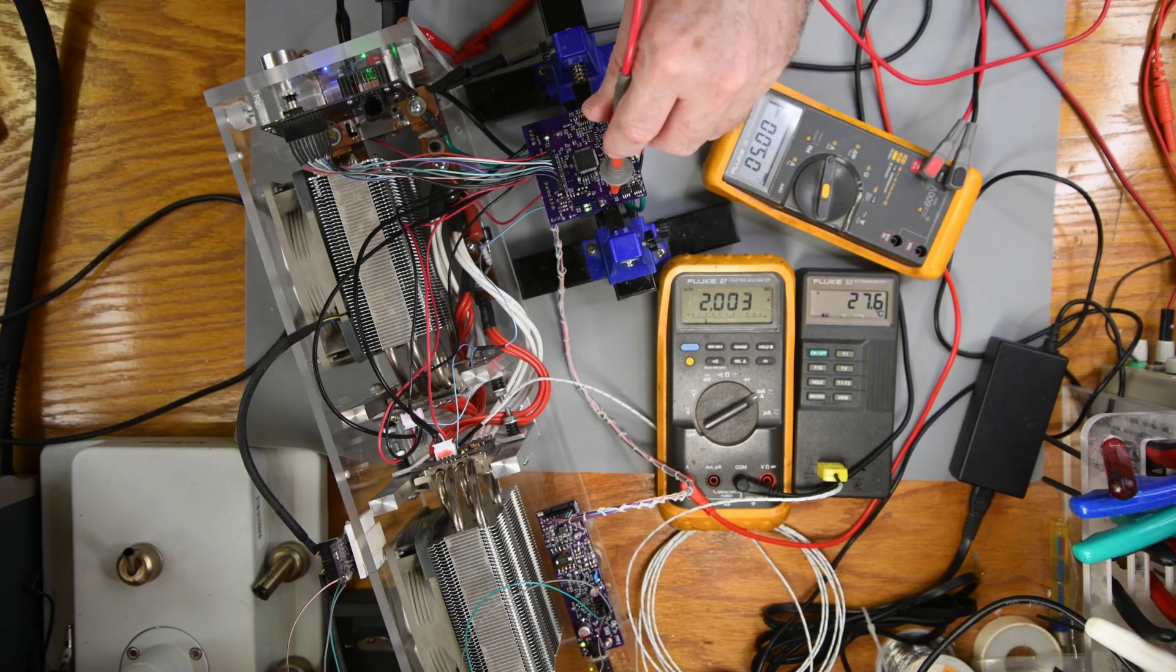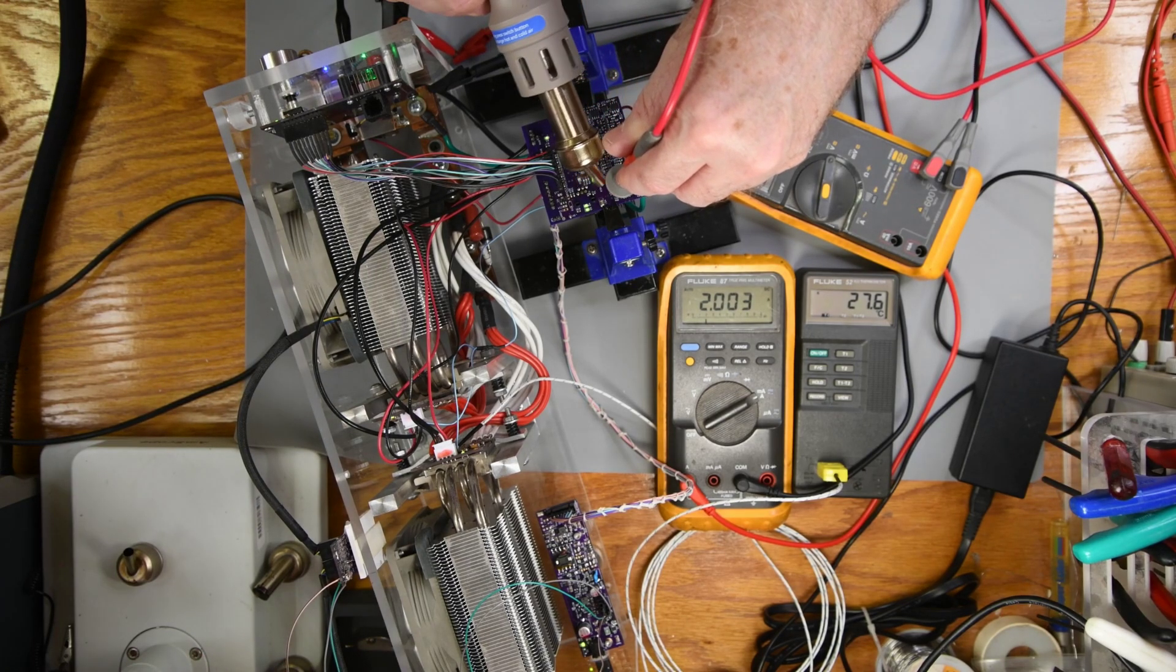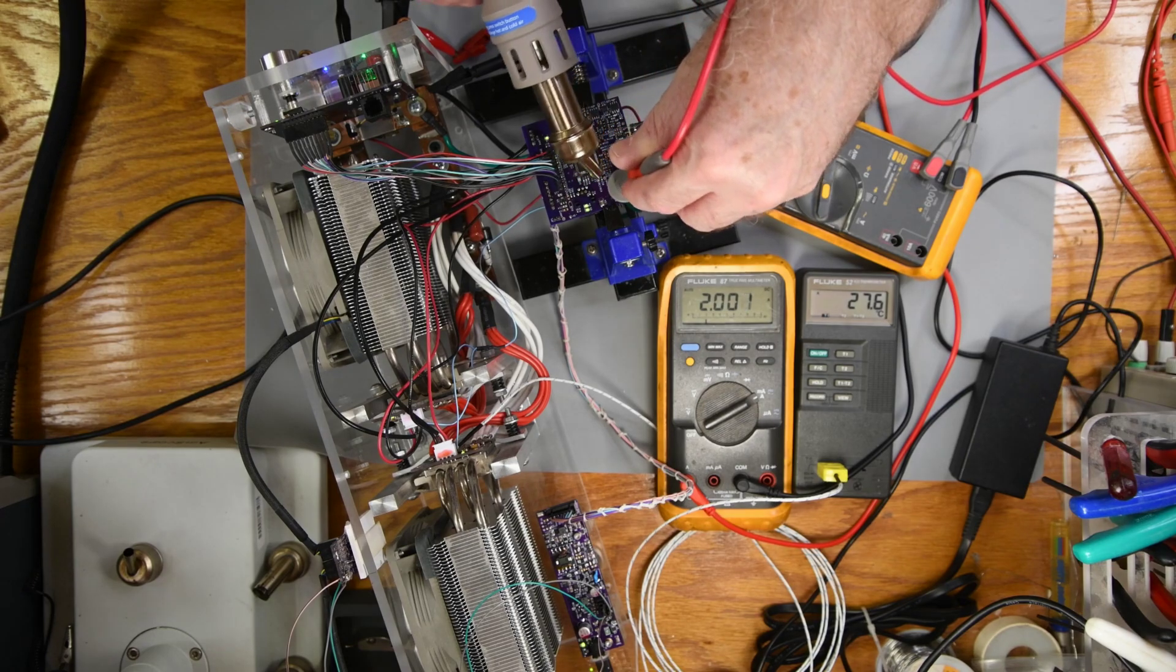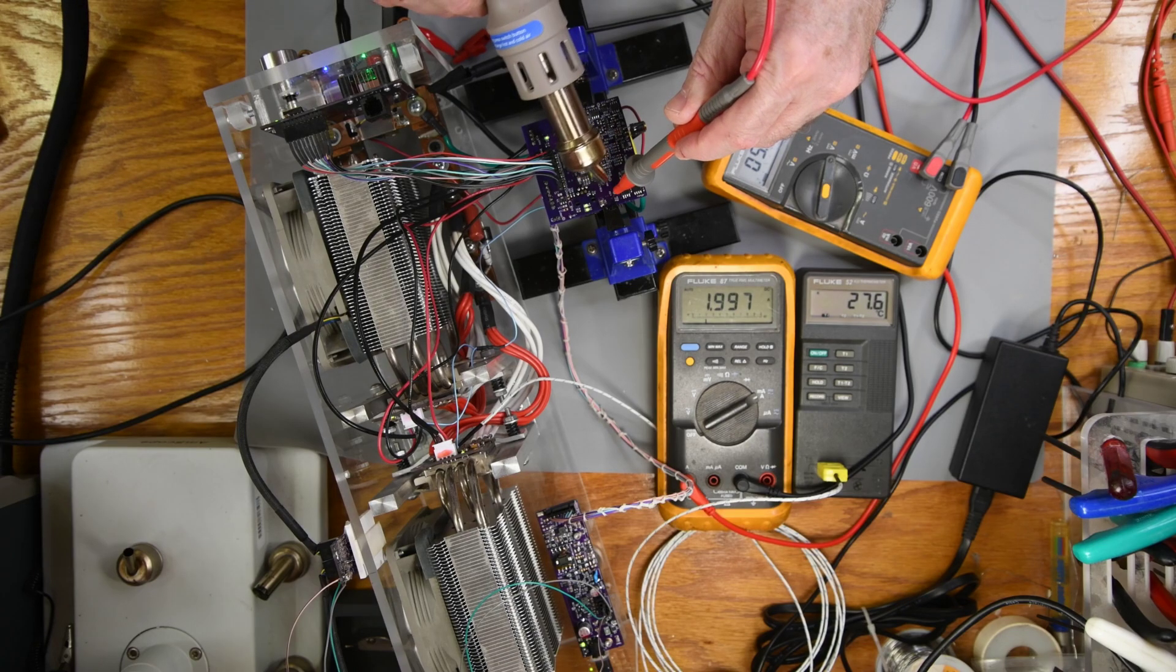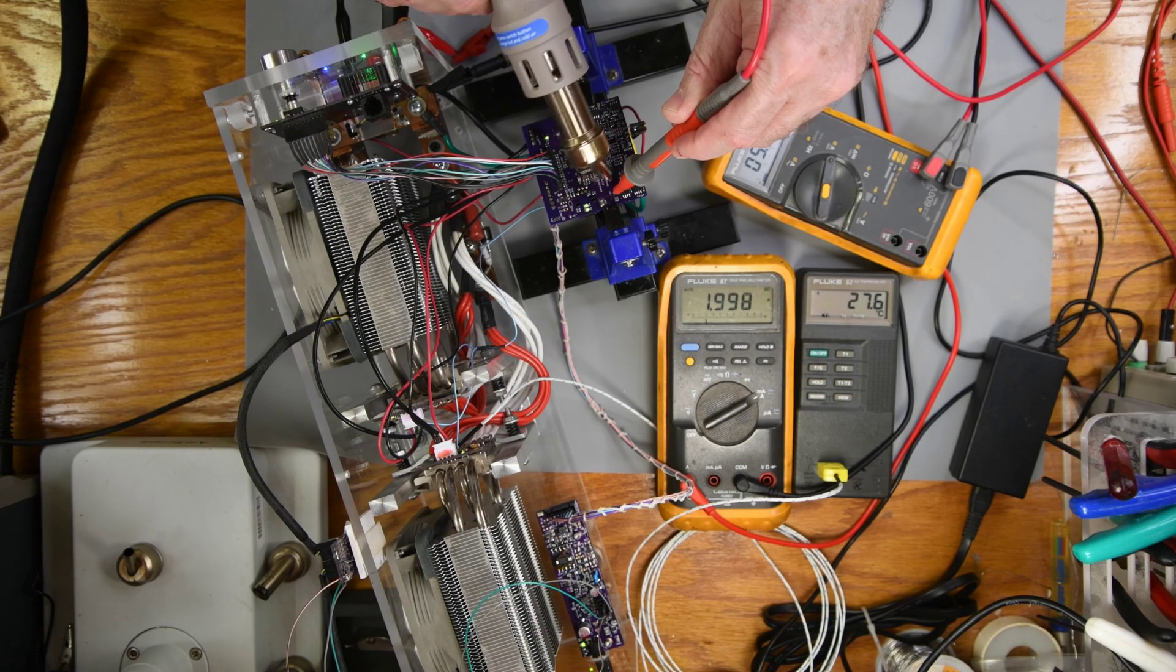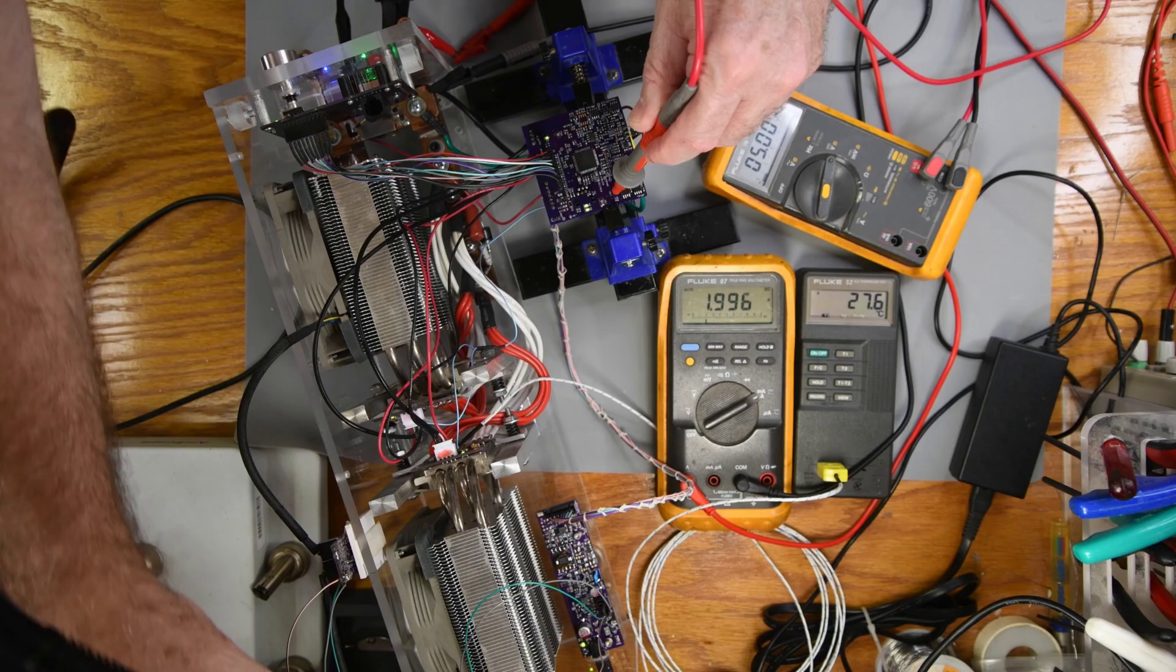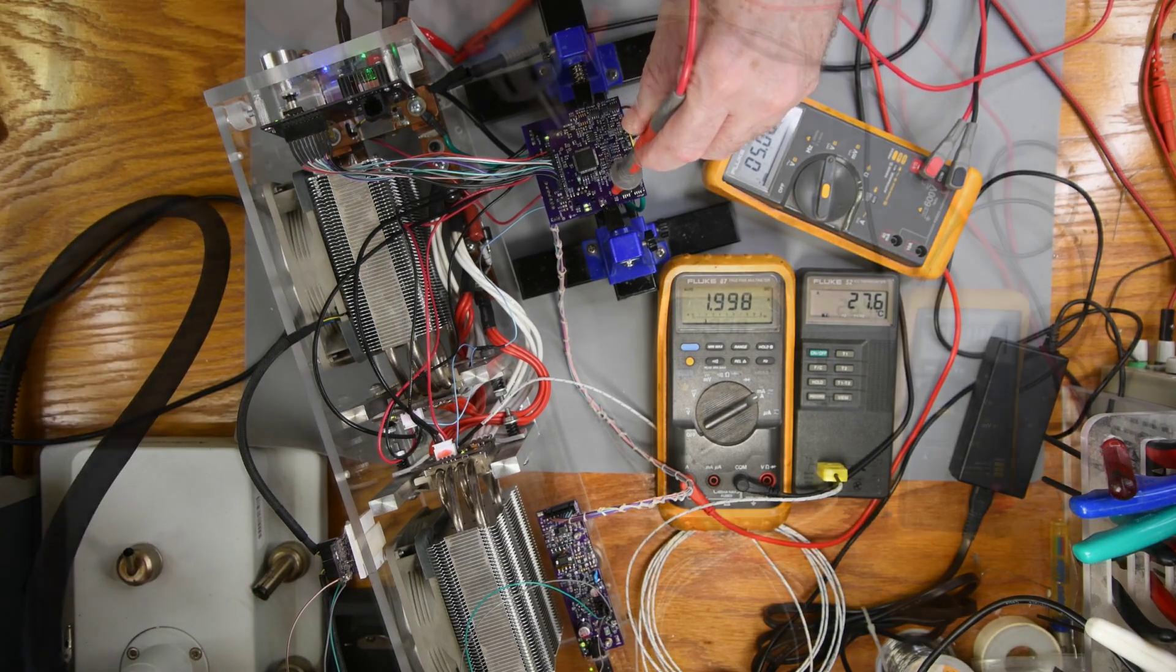And the 5 volt regulator? Pretty stable, I would say. Though a little drift on the 5 volt rail wouldn't have as much effect as a drift on the 3.3 volt rail.